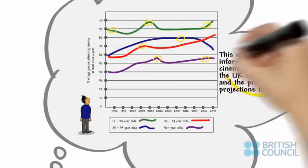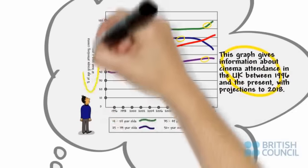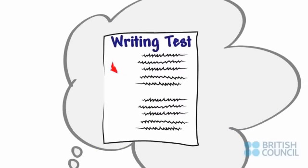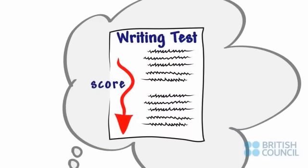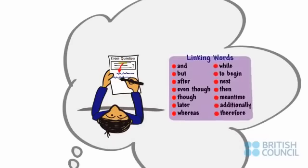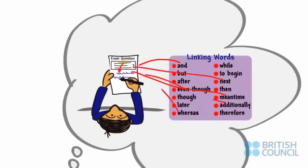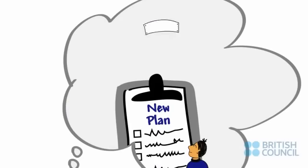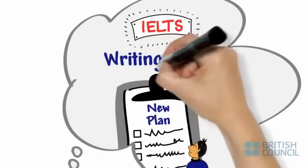He has also copied words from the exam question or from the titles of illustrations. This resulted in lower marks. In addition, he has used too many linking words or phrases just because he knows them. He realizes he needs a new plan for success in IELTS Writing Task 1.